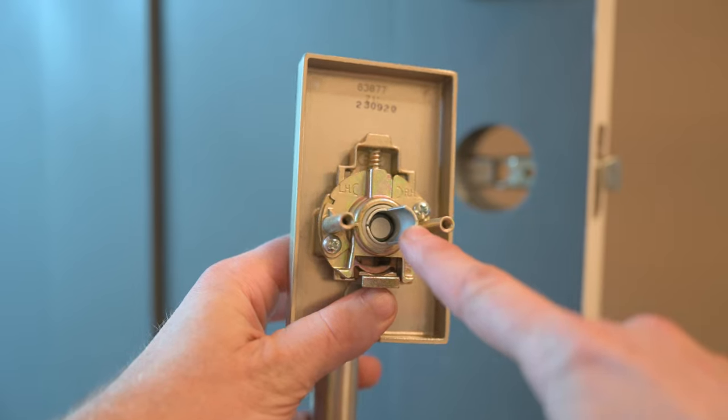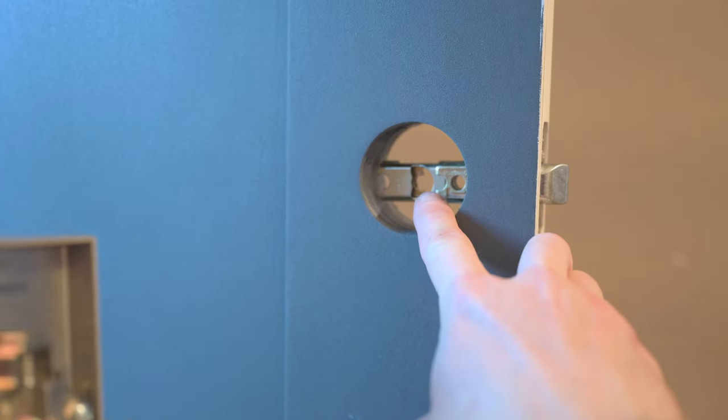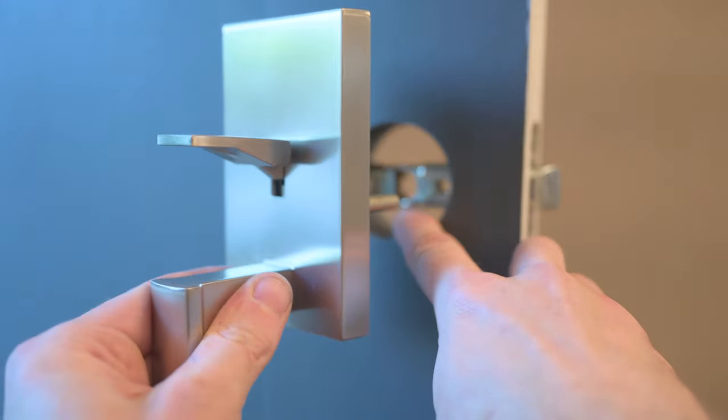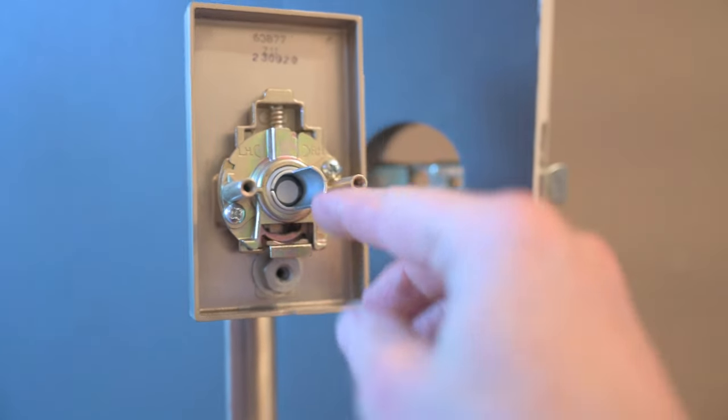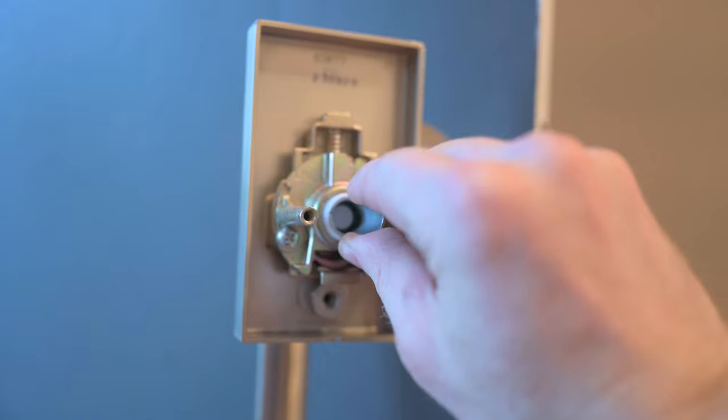This part here is called the spindle and it goes into that D-shaped hole. As you can see right now, it actually wouldn't line up. And these clever lock designers made it so you can pull the spindle out and rotate it around.